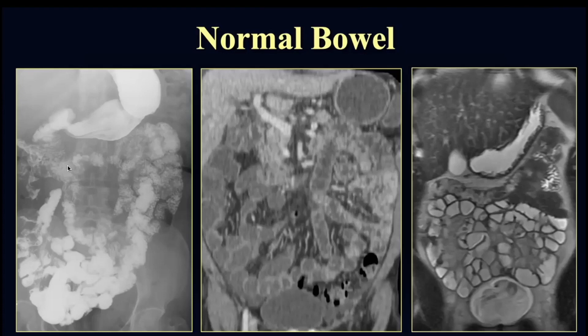You'll notice we see the same pattern on any imaging modality used to evaluate the bowel — an abundance of folds within the jejunum, which is predominantly located in the left upper quadrant of the abdomen, and fewer folds within the ileum, which is predominantly located in the lower abdomen and pelvis, sometimes more so in the right lower quadrant. This pattern of fold spacing in the jejunum and ileum is consistent regardless of imaging modality.